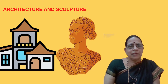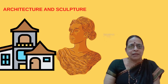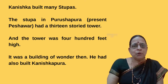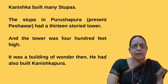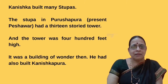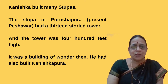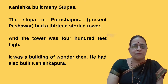Now let us learn about the architecture and sculpture of the Kushana period. Kanishka built many stupas. The stupa in Purushapura — present-day Peshawar — had a 13-story tower. Just imagine, there were 13 stories when he built the tower, and the tower was 400 feet high.